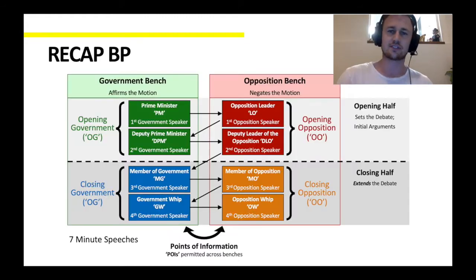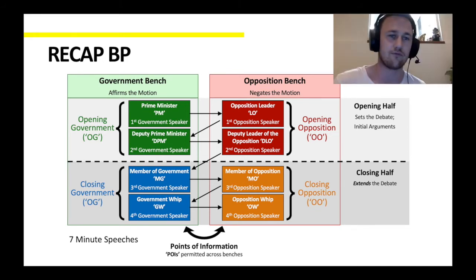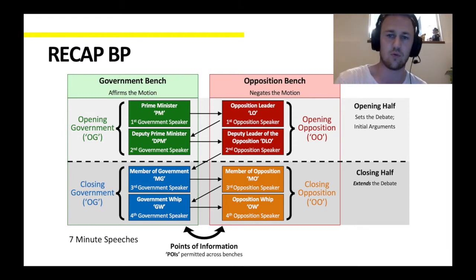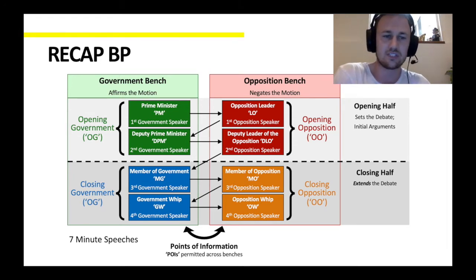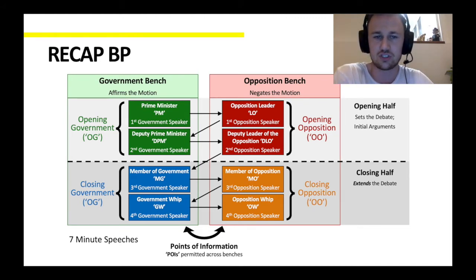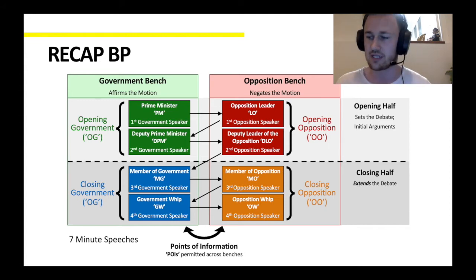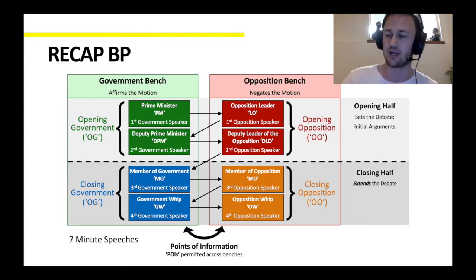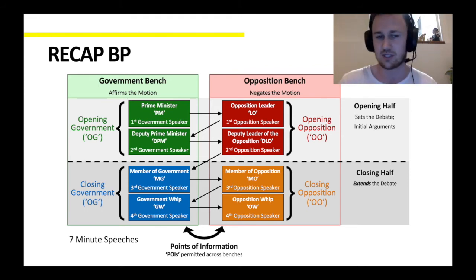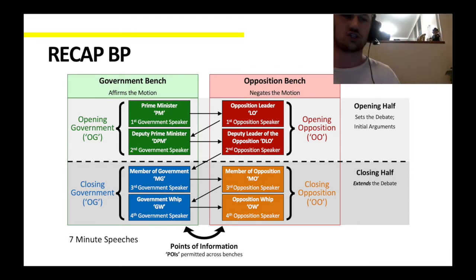So let's start with a quick recap of British parliamentary debating. You have four teams, two opening teams and two closing teams, two teams on Gov, two teams on Op, and those teams are given an order from first to fourth. Judges will actively compare each of those teams against each of the other teams in the debate in order to assess who gets all of the points and who came last. You have points of information.